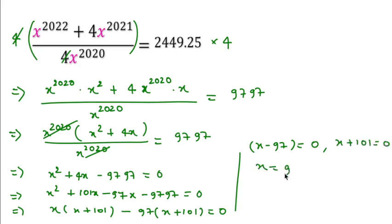So x equals 97 and x equals minus 101. This will be the right answer for this question. If you put the value, then you will get the same. Thanks for watching this video, and please like, share, and subscribe to this channel.